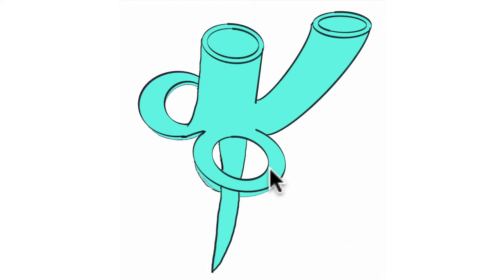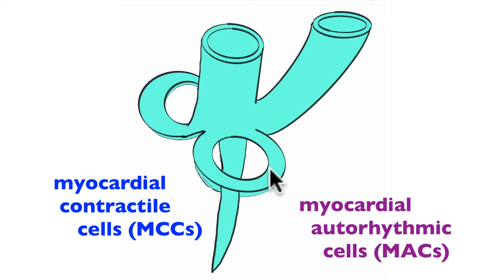Now, to be clear, there are two types of cells that make up the myocardium. We have myocardial contractile cells, which I tend to abbreviate as MCCs just for simplicity. And we have myocardial autorhythmic cells.